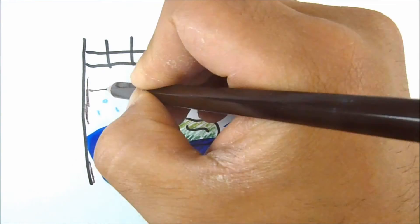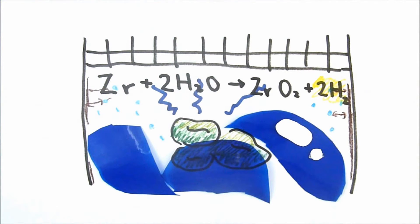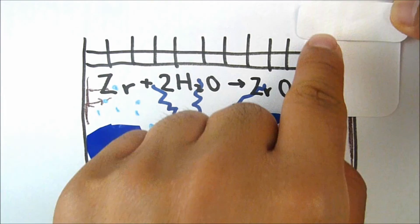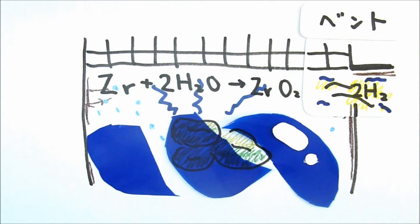Steam reacts with materials covering the fuel rods and produces hydrogen inside the reactor. To prevent an excessive accumulation of hydrogen, the reactors need to be opened to allow some of the gas to escape. This process is called venting.